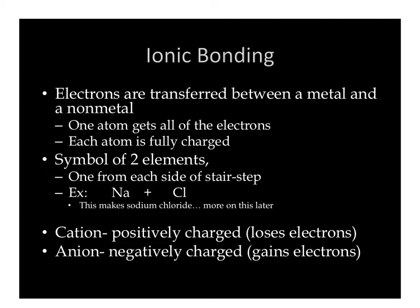We have very specific names for atoms once they become charged. If they are positively charged, they're called the cation — I remember this because cation has a T, like a plus sign. The anion is negative — I say 'an' for negative, there's an extra N in that one. So cation is positive and anion is negative.